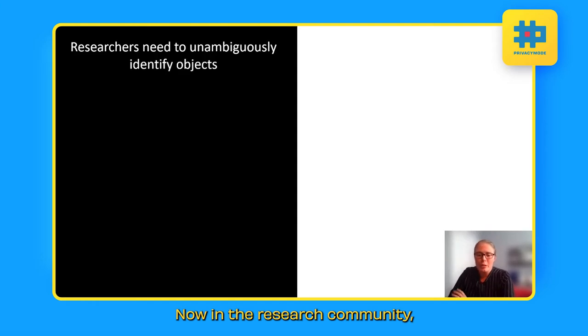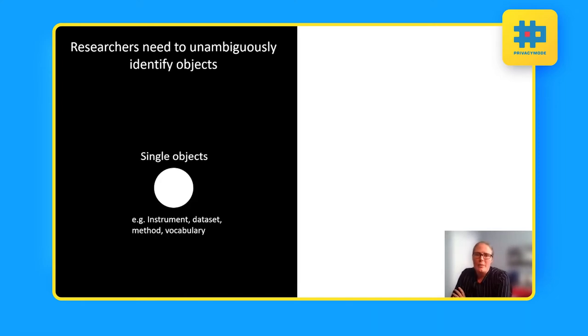In the research community, researchers need to be able to unambiguously identify objects. Single objects such as which particular instrument was used for the measurements or this particular dataset was a result of these research activities or methodologies, vocabularies. These are all things that could benefit by having an identifier.